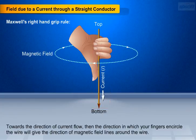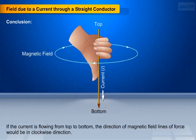There are two conclusions involved. The first is: if the current is flowing from top to bottom, the direction of magnetic field lines of force would be in clockwise direction.